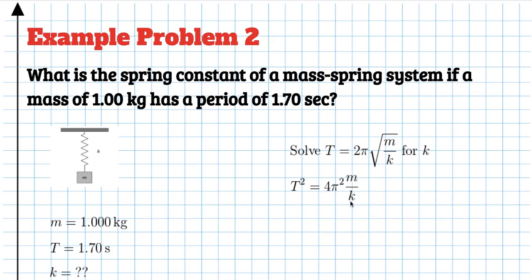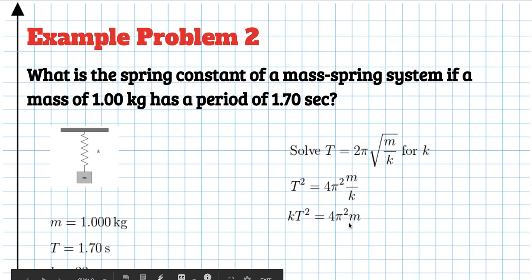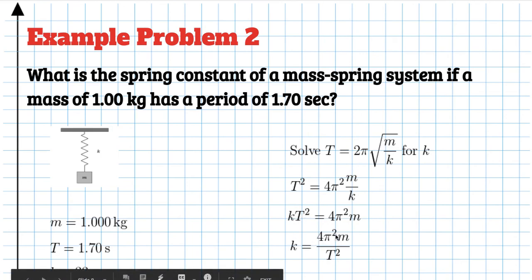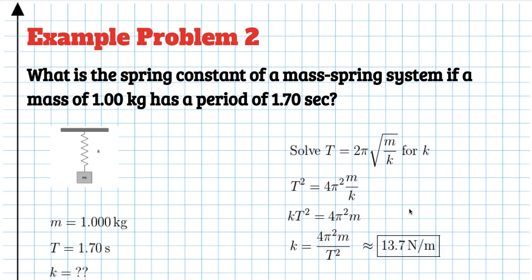Squaring everything gives T² = 4π²(m/k) — squaring removes the square root. Since k is in the denominator, multiply both sides by k to get kT² = 4π²m. Now you can solve for anything: if you need m, divide both sides by 4π²; in our case we solve for k by dividing both sides by T². Plugging in the numbers gives a spring constant of about 13.7 newtons per meter.